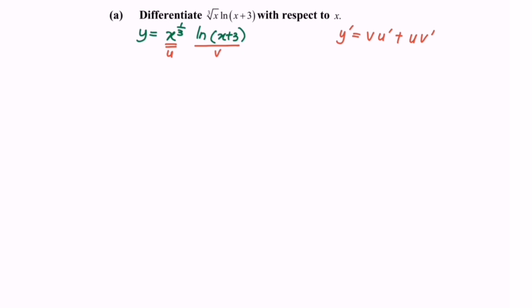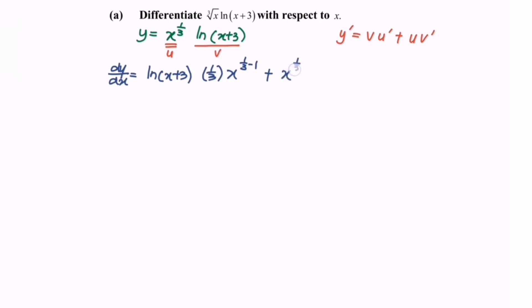So differentiating y with respect to x, dy/dx equals v, which is ln(x + 3), multiplied by u prime. Differentiating u, we get 1/3 multiplied with x to the power of 1/3 minus 1. Plus we have u, which is x to the power of 1/3, multiplied by v prime — differentiating ln(x + 3) gives 1 over (x + 3). Remember to differentiate the internal function, which gives 1.